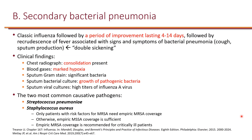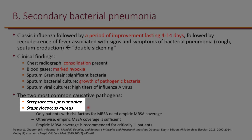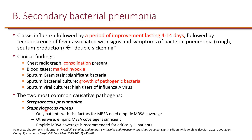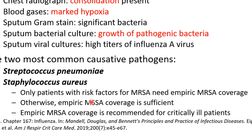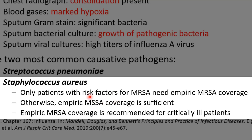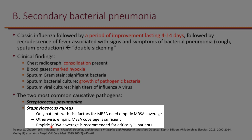Most influenza-associated secondary bacterial pneumonia originates from the community, making these community-acquired pneumonias. The common pathogens are Streptococcus pneumoniae and Staphylococcus aureus. Because Staphylococcus aureus is one of the top two organisms, the question arises whether to cover empirically for MRSA or whether MSSA coverage is sufficient. Community-acquired pneumonia guidelines provide risk factors for identifying those at risk for MRSA. For critically ill patients, however, empiric MRSA coverage is recommended by influenza guidelines.